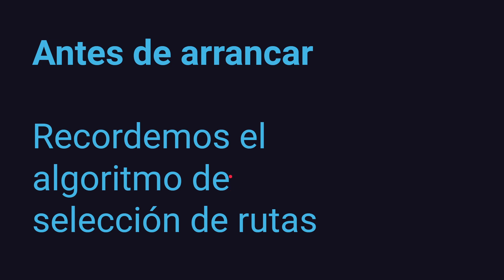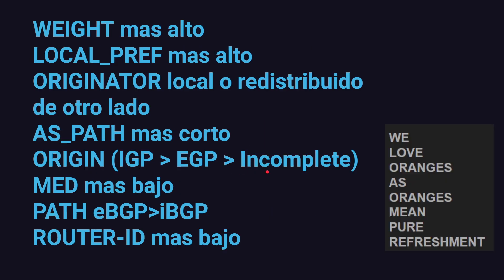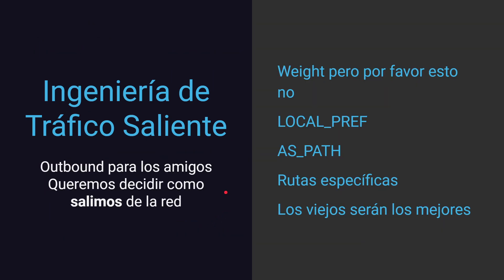Antes de arrancar, vamos a repasar el algoritmo de selección de rutas: Weight, local preference, originator, AS-PATH más corto, origin, MED más bajo, eBGP externo mucho mejor que iBGP interno, router ID más bajo. Y si todo coincide, la ruta más vieja.